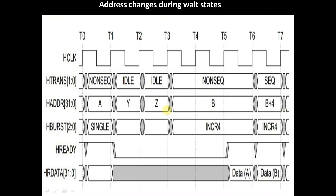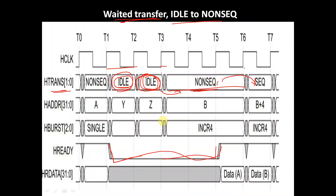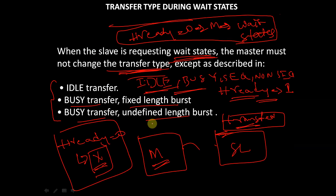So these are the three conditions in the wait state where a master is allowed to change the transfer type even during wait states.